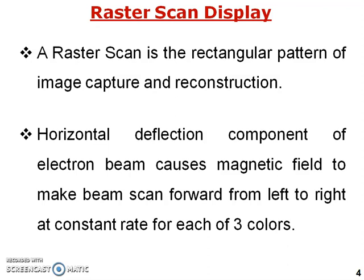To scan from top to bottom and left to right, two types of deflection plates are used. The horizontal deflection plate causes a magnetic field to make the beam scan forward from left to right, and the vertical deflection plate scans from top to bottom. Three color dots are used to maintain the picture.